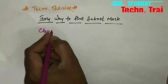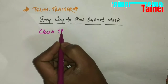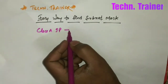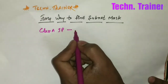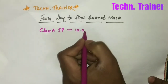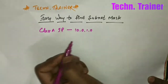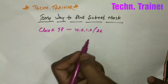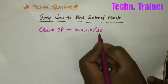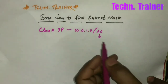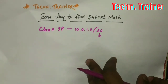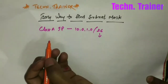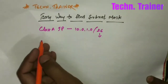I'm going to take a Class A IP, which is 10.0.1.0, and the CIDR value is /26. As you know, CIDR stands for Classless Inter-Domain Routing. So we are going to find the subnet mask in a very easy way.